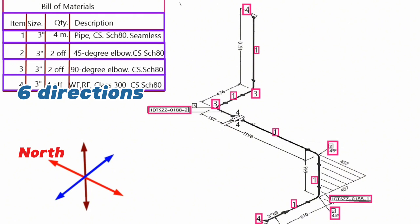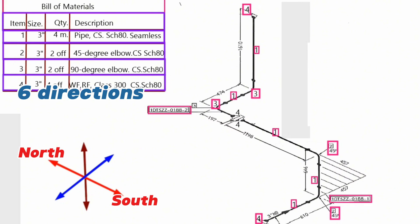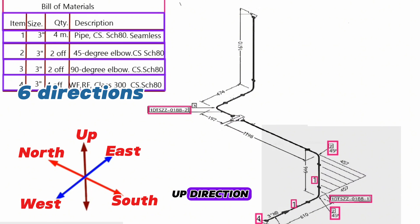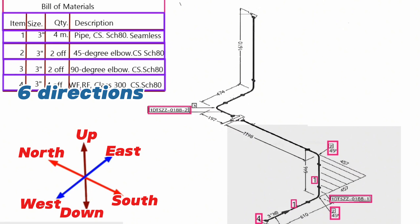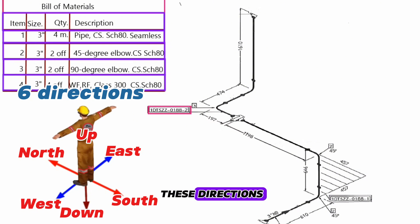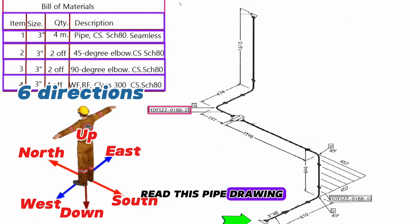North direction. South direction. East direction. West direction. Up direction. Down direction. The person reading the drawing should imagine himself facing north, provided that he is in the center of these directions. We will start to read this pipe drawing from this point.